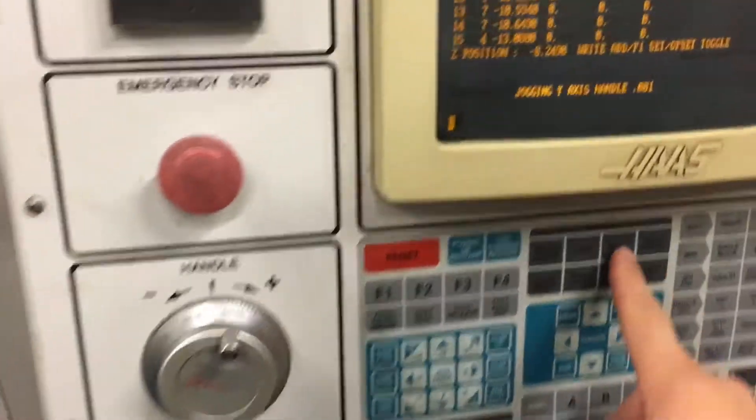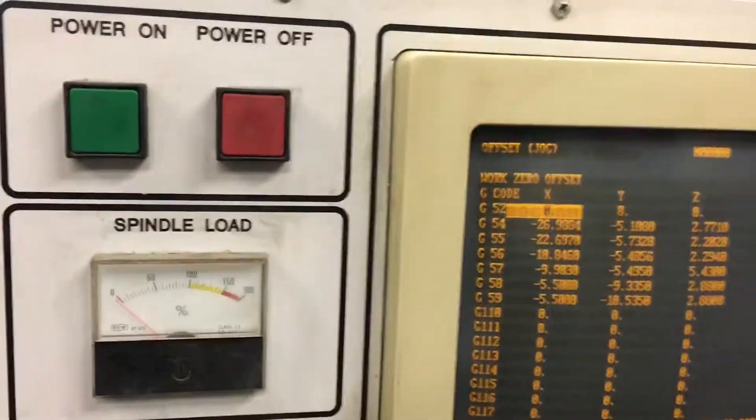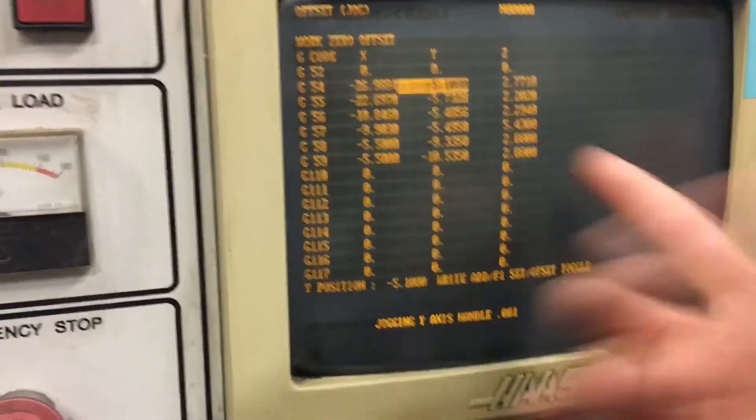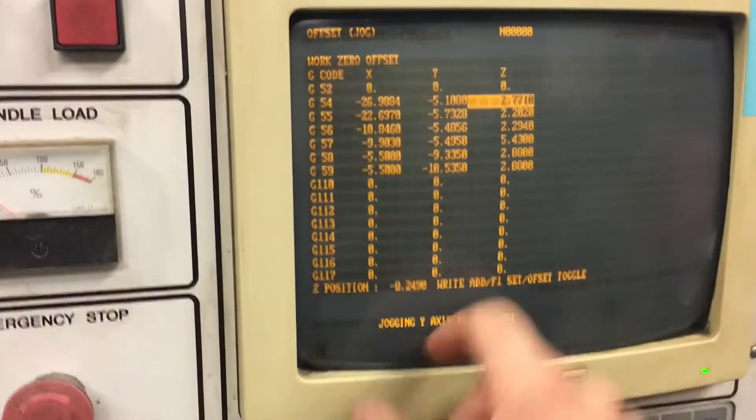From there we're going to press the offset button. We're looking at G54. We're in the Y position. You can see right here, this is the same as this, which means that it hasn't been moved. Nonetheless, you can click part zero set and it'll change that.